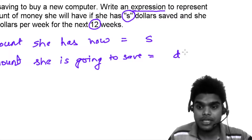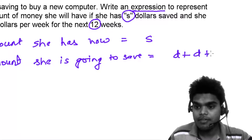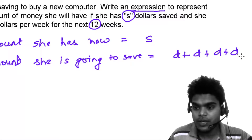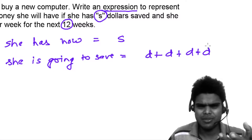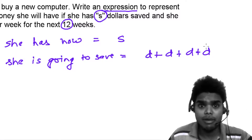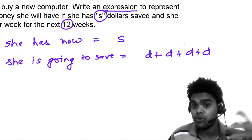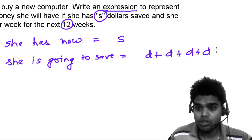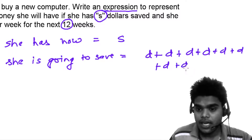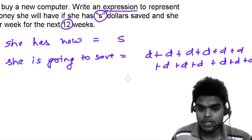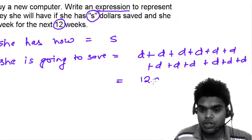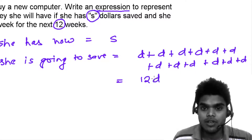For the first week she will save D, for the second week another D, for the third week another D, for the fourth week another D — like this, for 12 weeks. So in 12 weeks, she is going to save 12D amount of dollars.